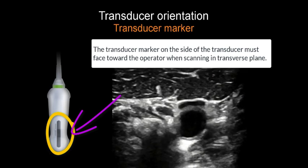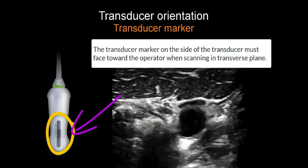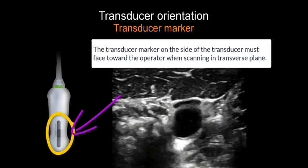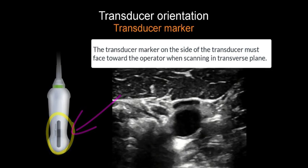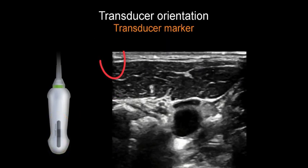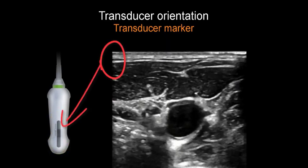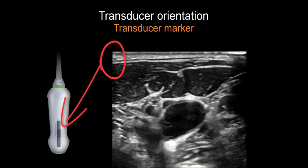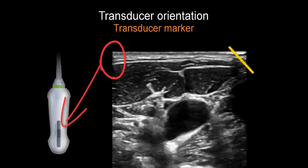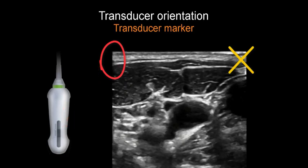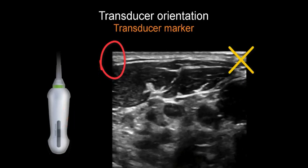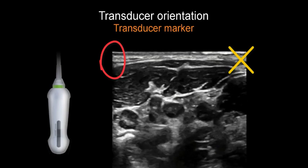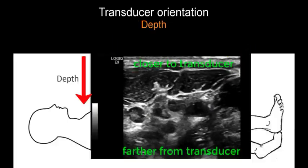All the images presented on the right side of the screen using a transverse plane will therefore represent structures that are closer to you, therefore on the right side of the patient. All the structures on the left side of the screen are further away from you and therefore on the left side of the patient.